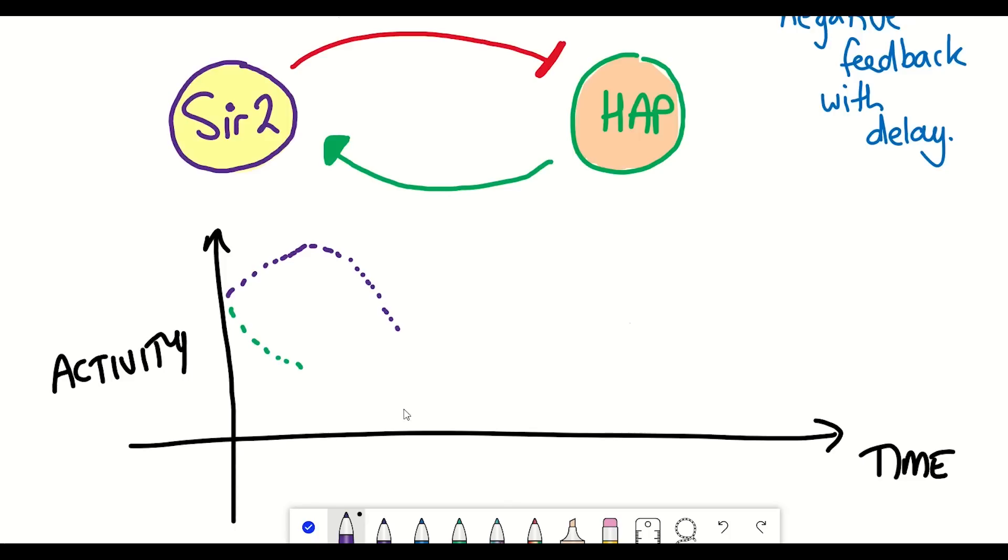If we lose SIR2 activity that means that HAP is no longer repressed. If HAP is no longer repressed then it becomes active and it can reactivate SIR2. And the story continues. It's an oscillation.